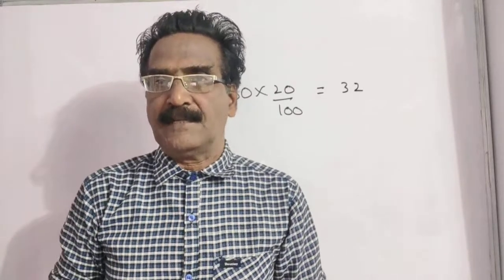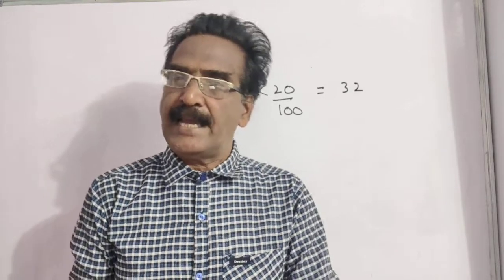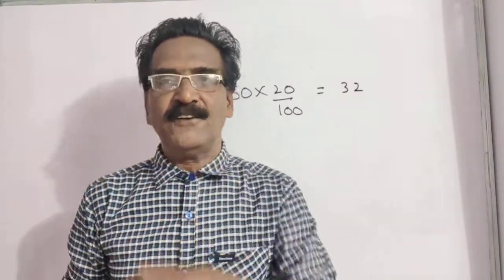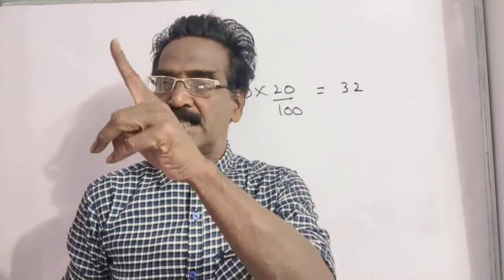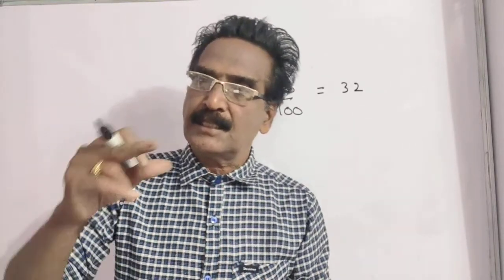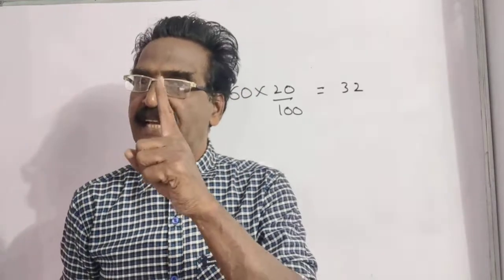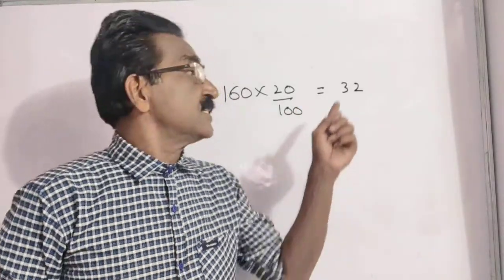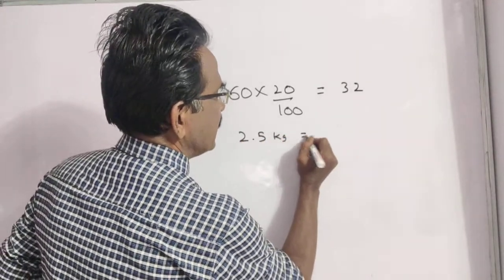Since there is a reduction of 20 percent, if he wants the same quantity as before the reduction, he can pay 32 rupees less. If he pays this 32 rupees as well, he gets 2.5 kg more. So the price of 2.5 kg is equal to 32 rupees.